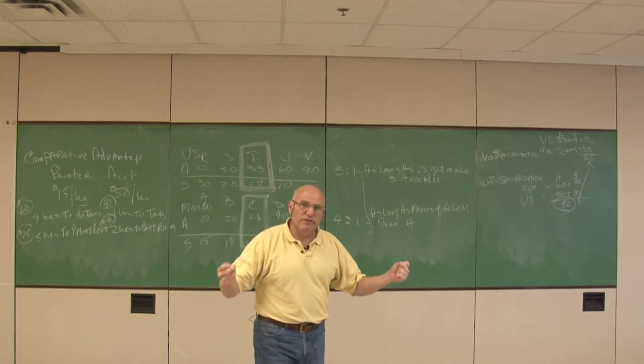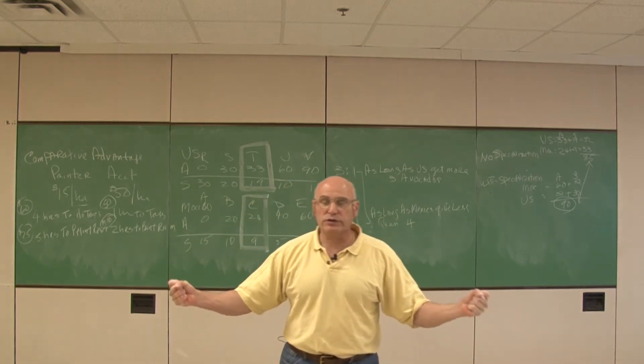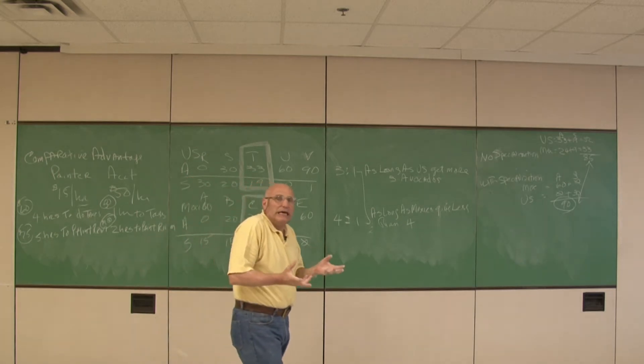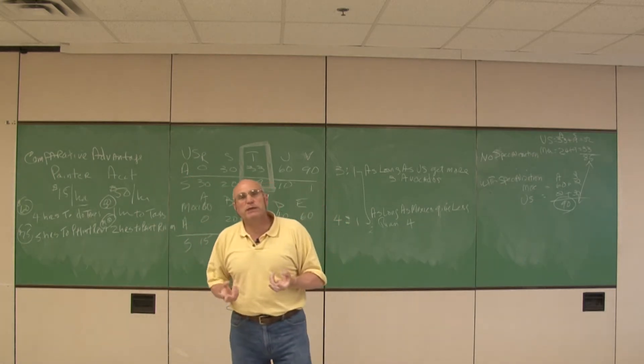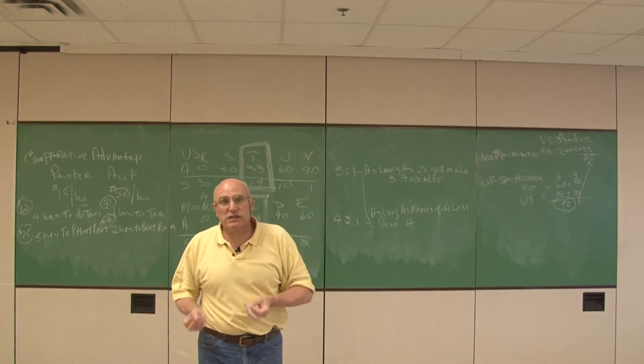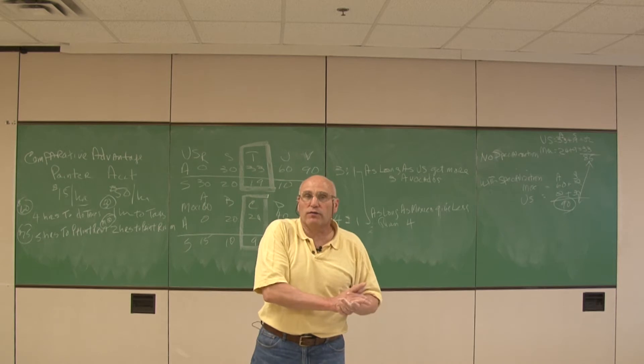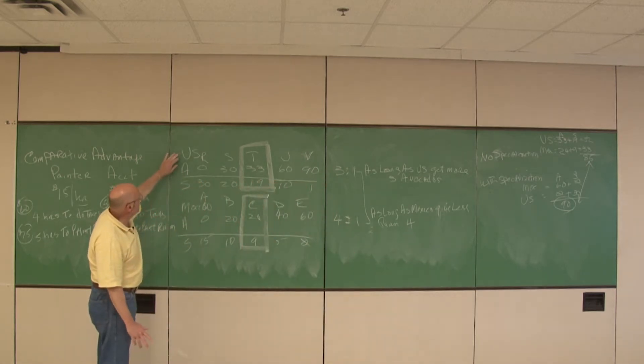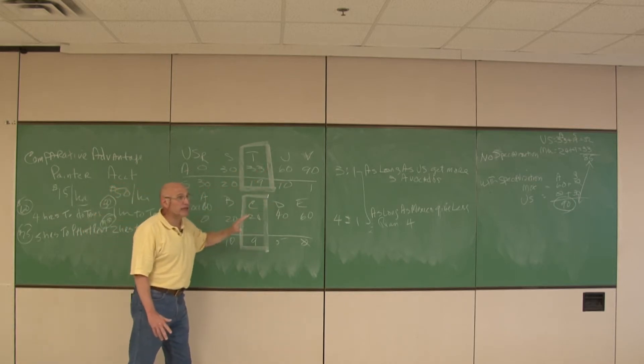So there is an advantage to trade. There's an advantage to say even though I can produce what you're making, you can do it more cheaply than I can. And if we take that and take it from two specific jobs and transfer it over to countries, we have the production possibilities curve of the United States and Mexico with the various amounts of products that they can produce.